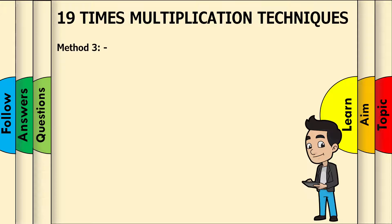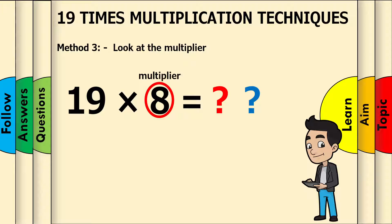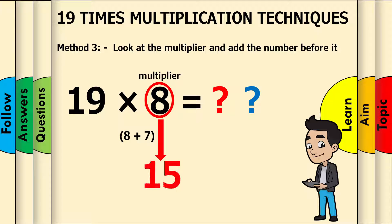Method 3: Look at the multiplier, which in this example is 8. Add the number before it. The number before 8 is 7. So do 8 plus 7, which is 15. Replace this within the answer.